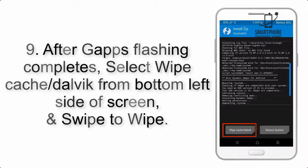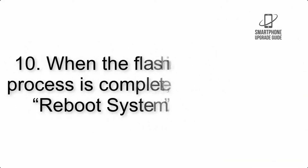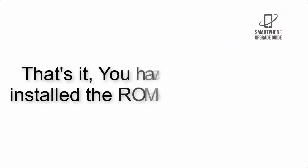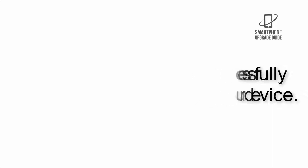Step 8: Flash the GApps zip package in the same manner. Step 9: After GApps flashing completes, select Wipe Cache and Dalvik from the bottom left side of the screen and swipe to wipe. Step 10: When the flashing process is complete, hit Reboot System. That's it — you have successfully installed the ROM on your device.